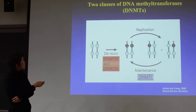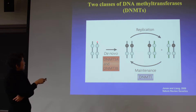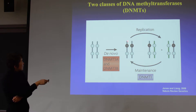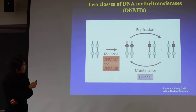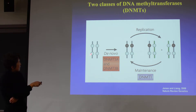So here is the replication — initially we have two copies. This is actually two strands of DNA, not two chromosomes.